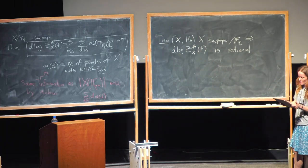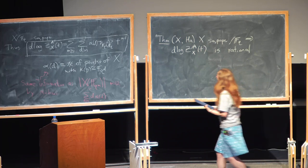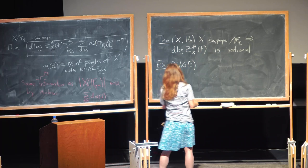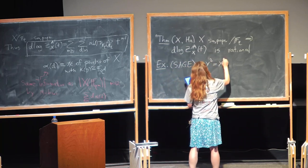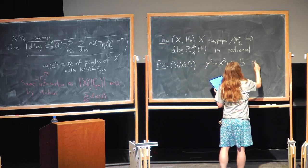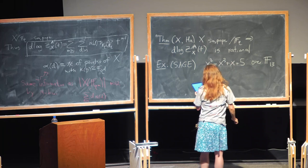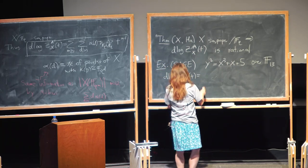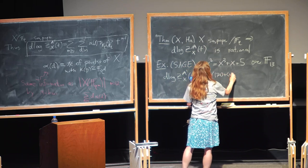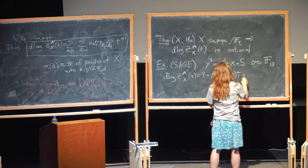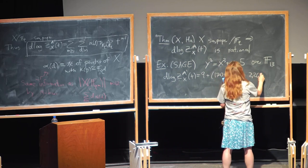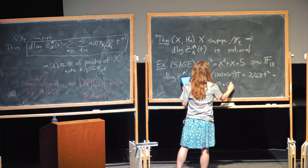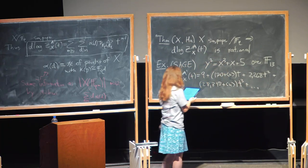We can furthermore compute what it is. For example, you can get a computer to compute hyperelliptic curves very nicely. If we take the elliptic curve y² = x³ + x + 5 over F_{13}, then d log ζ_{X,A1}(T) equals ⟨9⟩ + ⟨170+u⟩·2t + ⟨2268⟩t² + ⟨28898+u⟩t³ + ... and you can keep going.